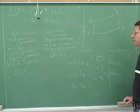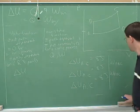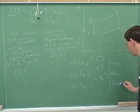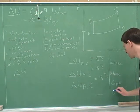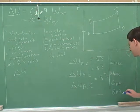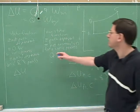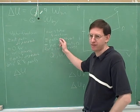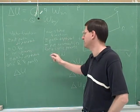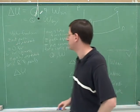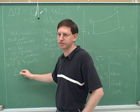By the same token, would the heat transfers be the same or different for these two different paths? Different, because heat is also path dependent. Different paths tend to give you a different heat. The only thing that's path independent in this equation is delta U.